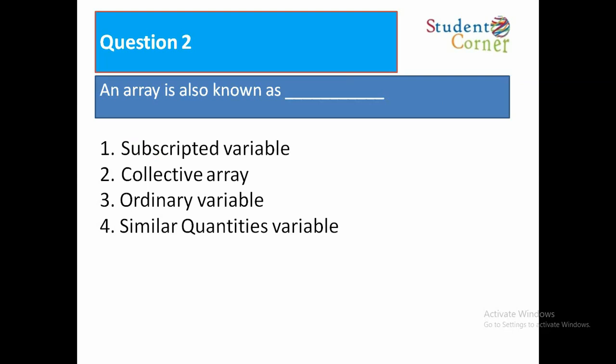Question number two: An array is also known as — Option 1: Subscripted variable. Option 2: Collective array. Option 3: Ordinary variable. Option 4: Similar qualities variable. The answer is Option 1: Subscripted variable.